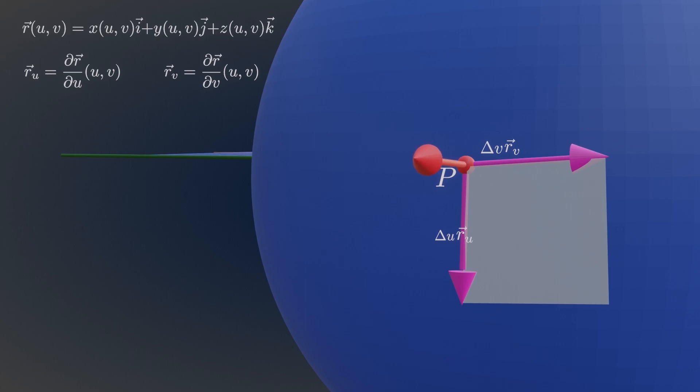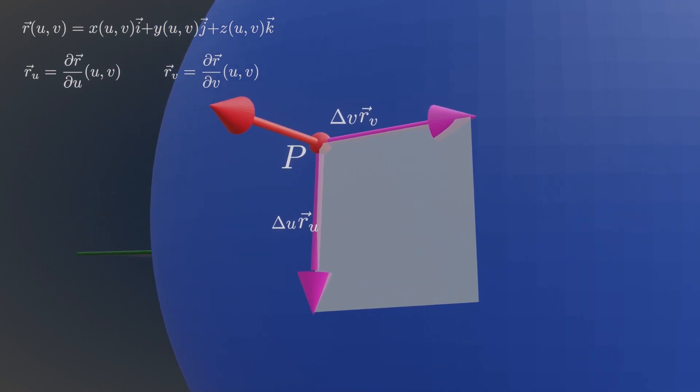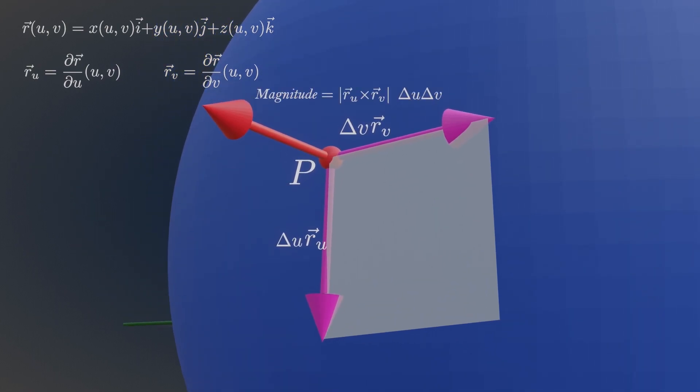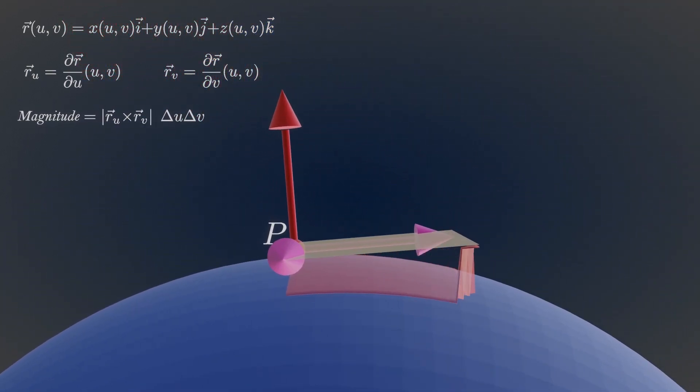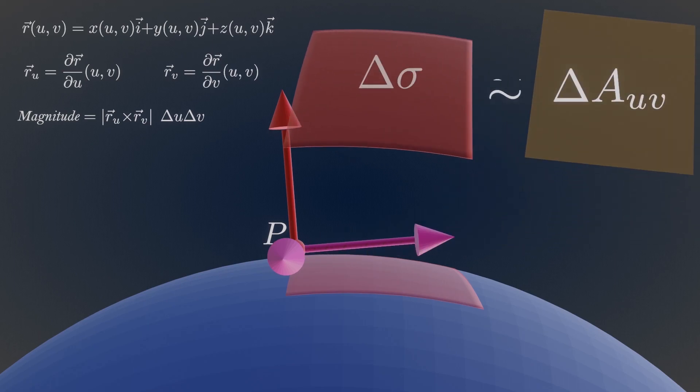So this new vector is perpendicular to our surface. The magnitude of this new vector is the area of this parallelogram. And the area of this parallelogram can be nearly approximated with the area of this infinitesimal small surface or the area of this curved patch element.